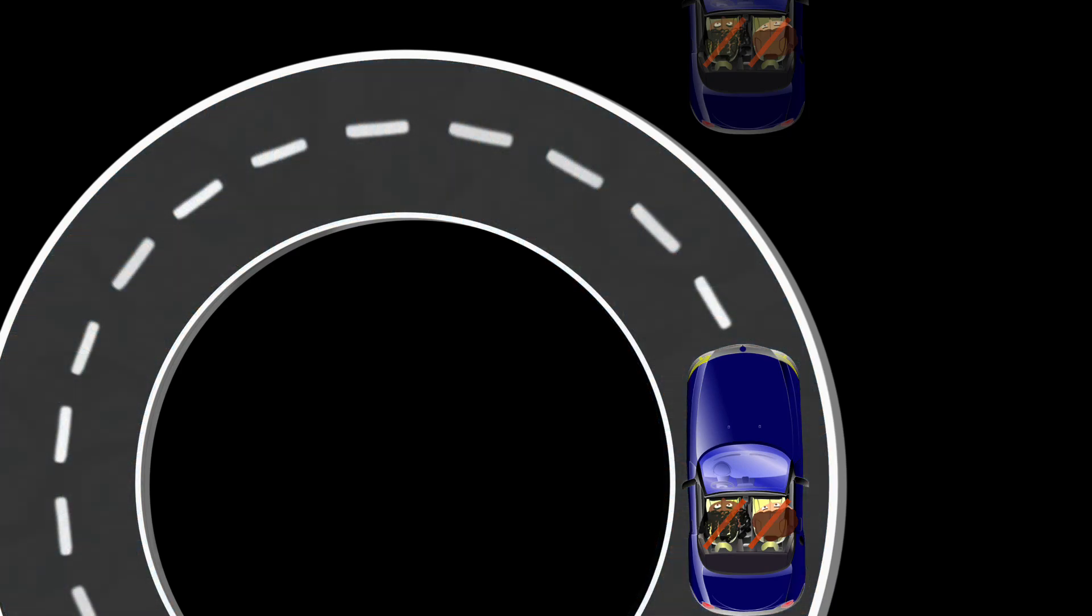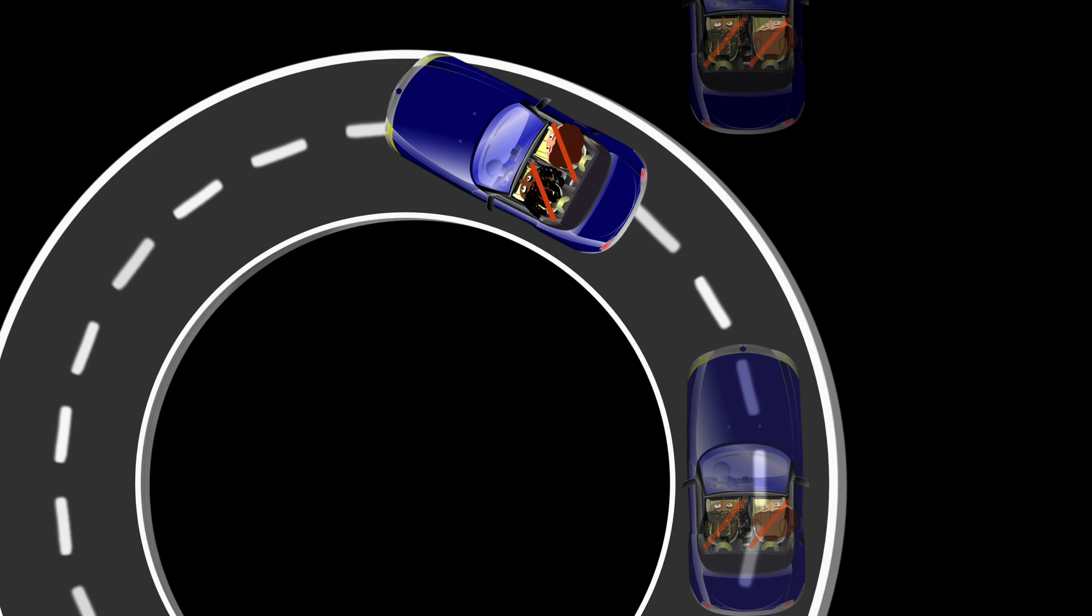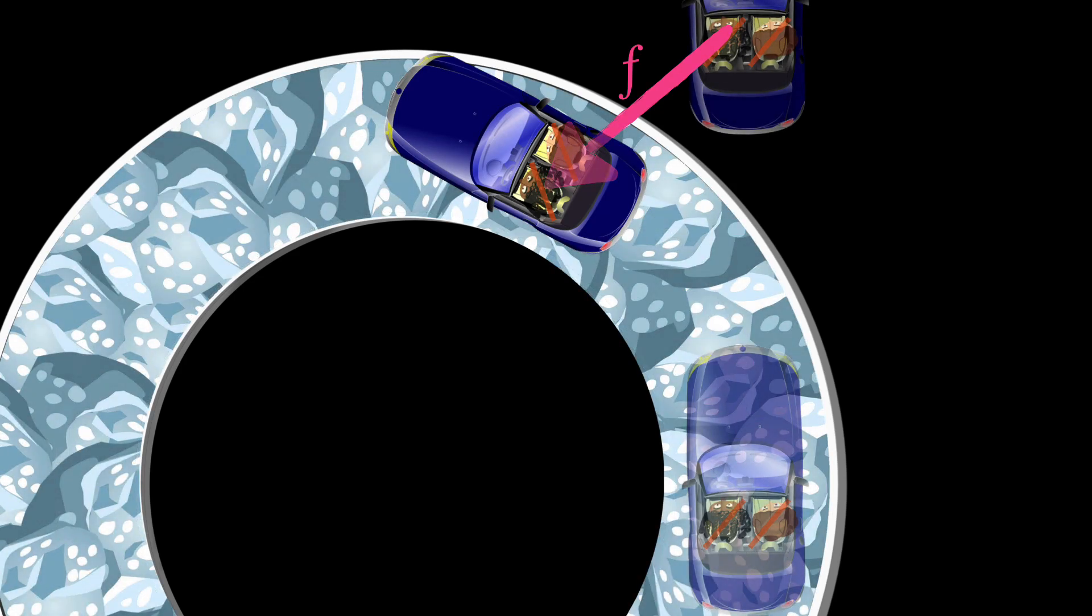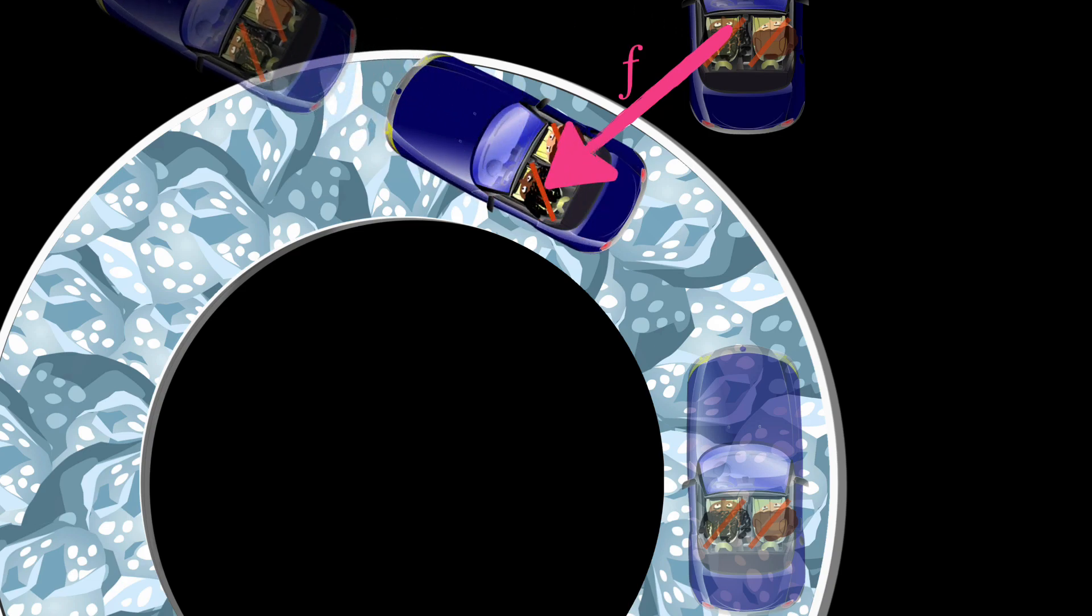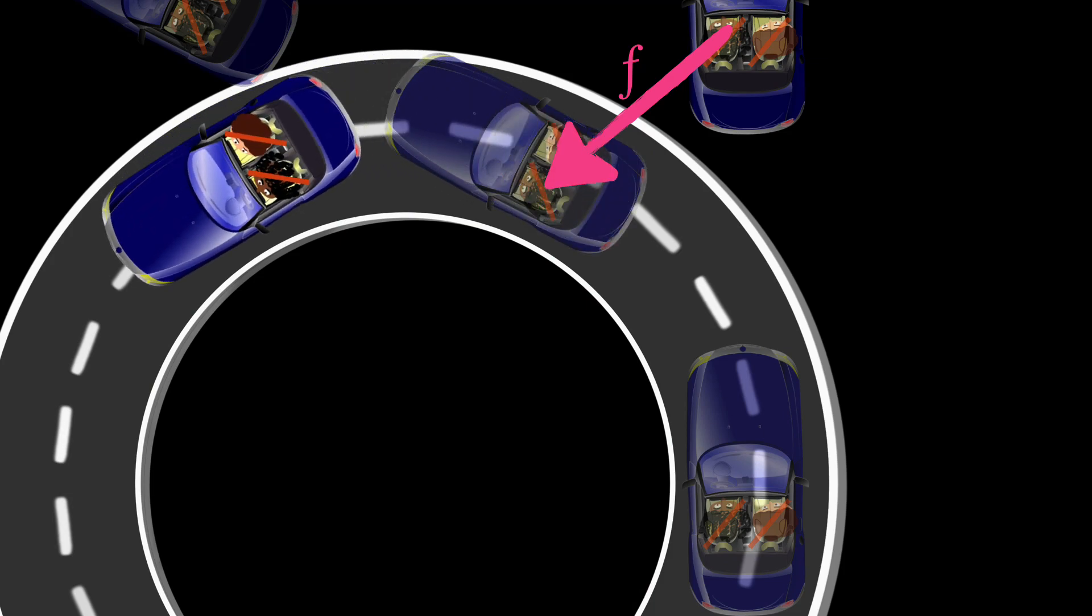But thankfully, the road has not turned into ice. As a result, there is friction, which is allowing you to make that turn. So frictional force is literally pulling your car from that straight line path, making you turn. And again, what if your road turned into ice for the second time? Well, your car would again go in a straight line. But thankfully, it's not turned into ice, so your car can take a turn.